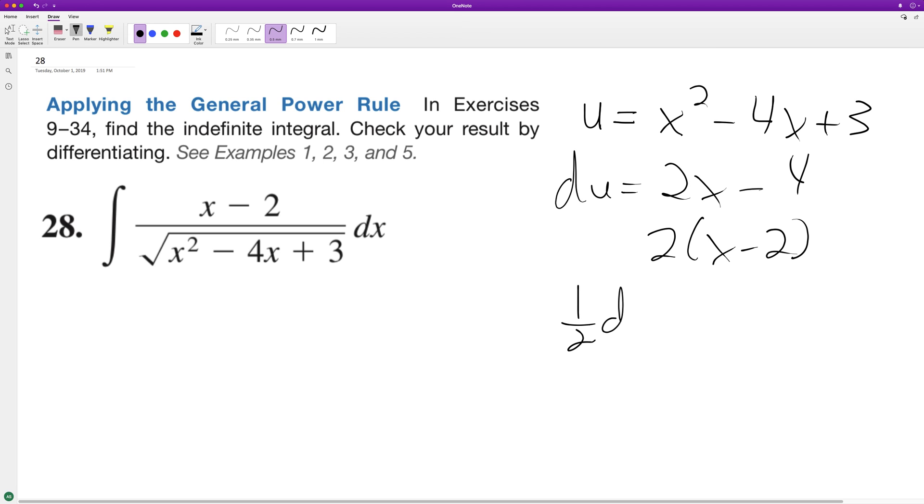So one half of du, which is 2x minus 4, will be equal to—because we divide through by 2—will get us the x minus 2, which is equal to dx.